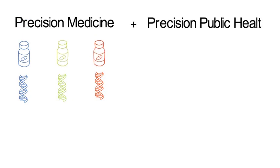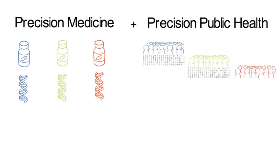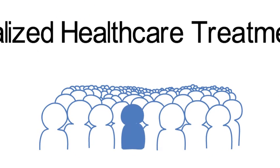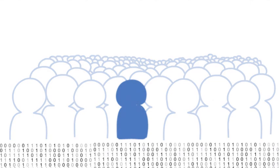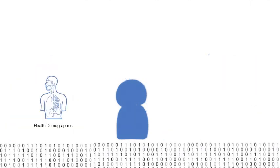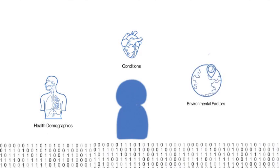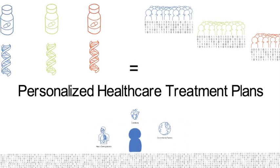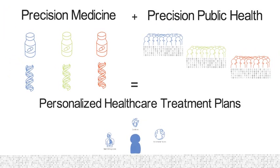We believe precision medicine and precision public health are fundamental in order to successfully implement personalized healthcare treatment plans. With clear access to information that relates to certain health demographics, conditions, or environmental factors, physicians and patients can proactively manage their health, which ultimately contributes to disease prevention.